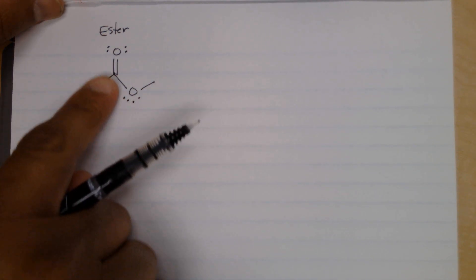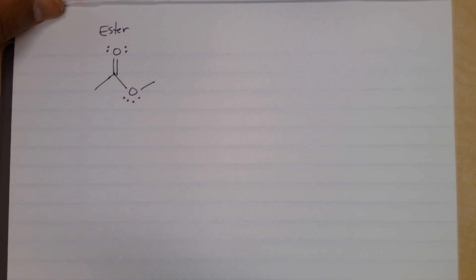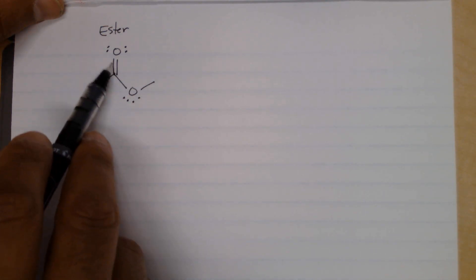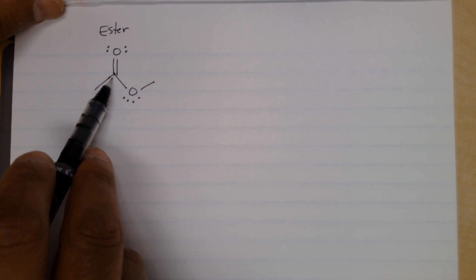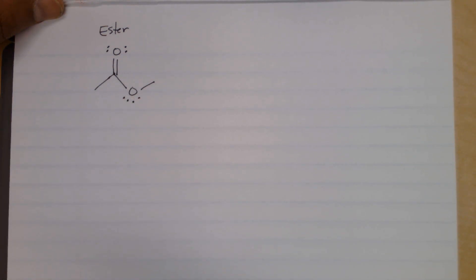Whenever you have esters or carboxylic acids, whenever you have this COO in there, these are always good candidates, you can draw resonance structures. And the reason for that is because you do see the double bond here in the allylic position, we have lone pairs of electrons.